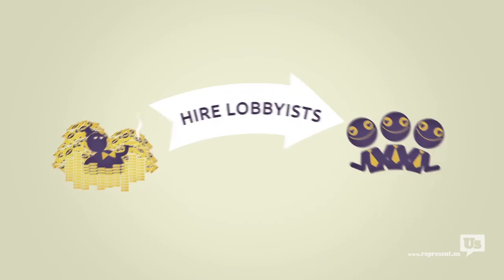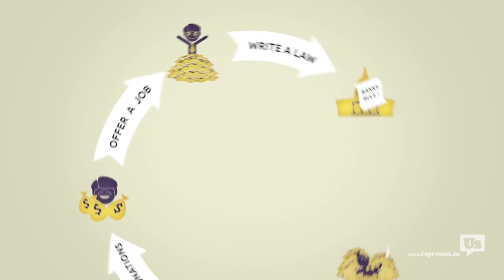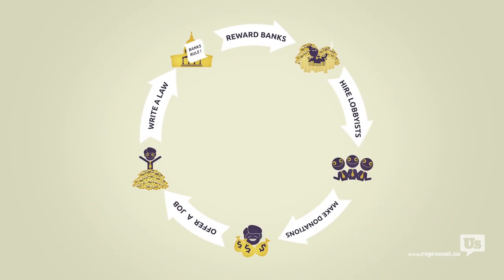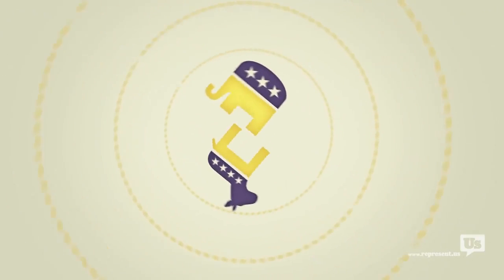A special interest hire some lobbyists. Those lobbyists collect campaign contributions, offer jobs, and then write the laws that Congress then passes to help those same special interests. This happens every day on every single issue with politicians of both parties.